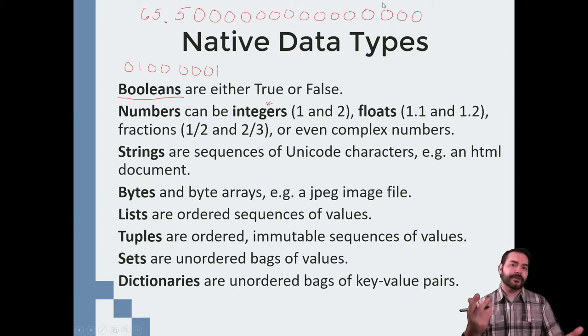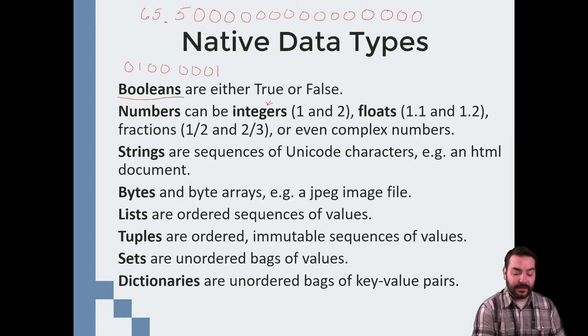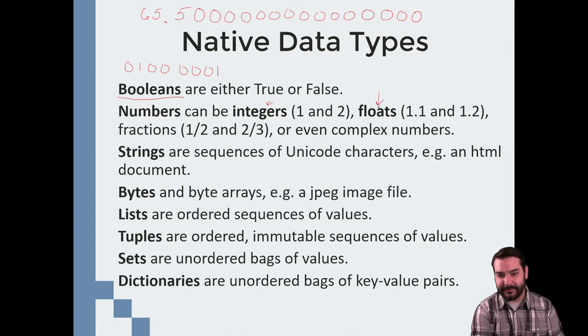So all of a sudden, Python introduces, and most programming languages introduce, this idea of something called a floating point number. And basically speaking, it designs out the binary strings so that it handles some level of decimal places for us automatically and just doesn't worry about it. Now, it also has things like fractions and complex numbers as well.